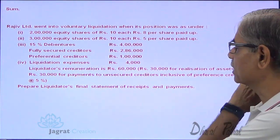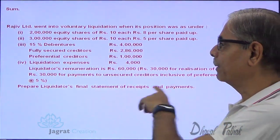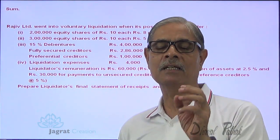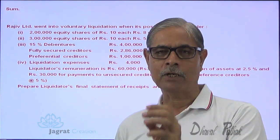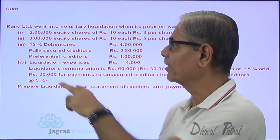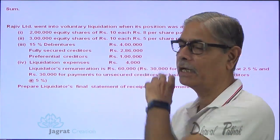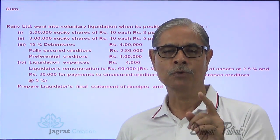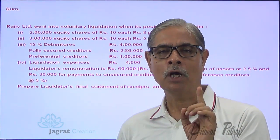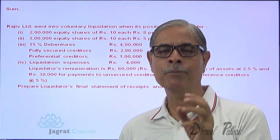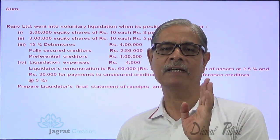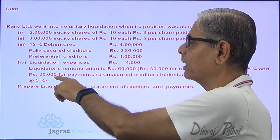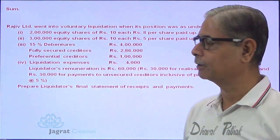We are required to prepare the liquidator's final statement of receipts and payment. The missing item is how much are the unsecured creditors — preferential creditors are already given, but the unsecured creditors figure is missing. At the same time, what is the total realized value of assets is also not given, but we can find that out on the basis of this information.